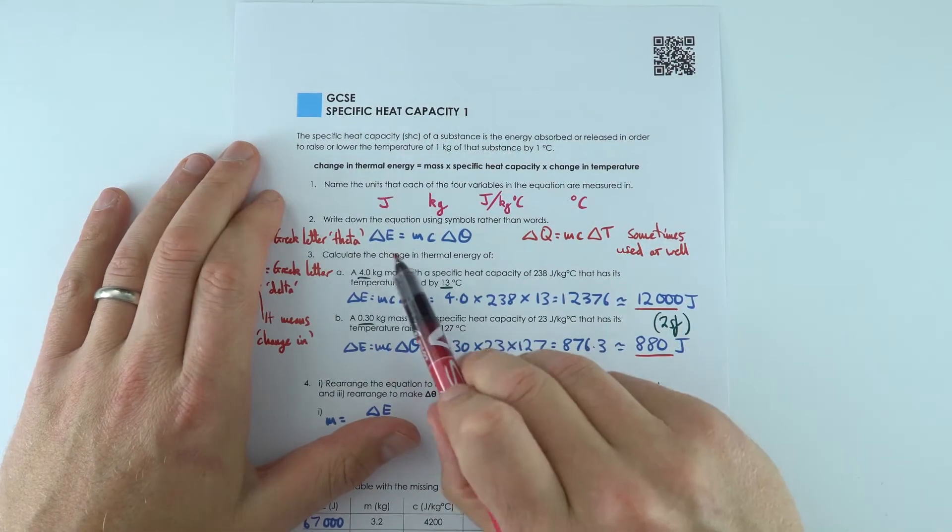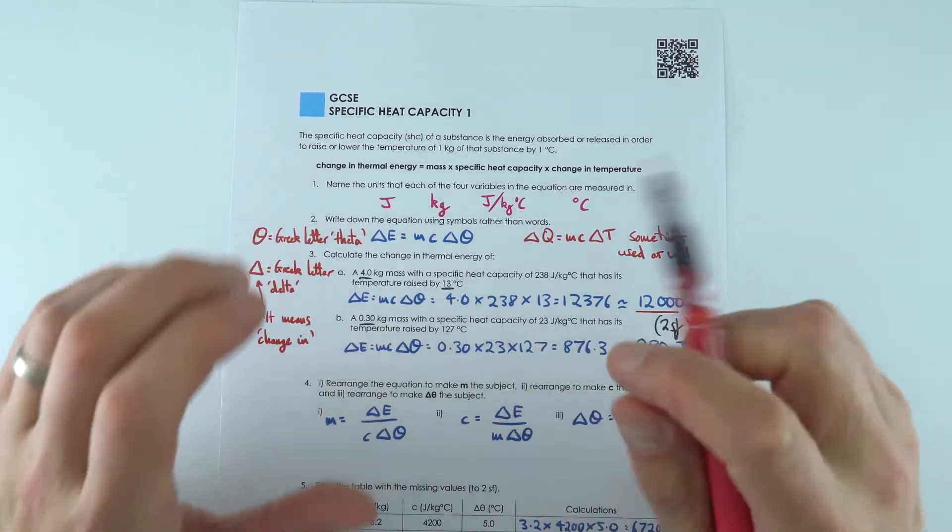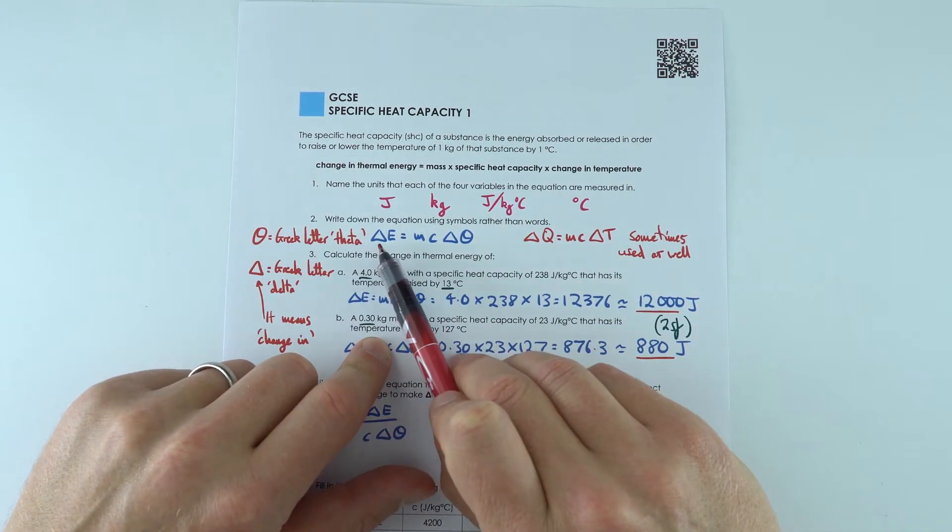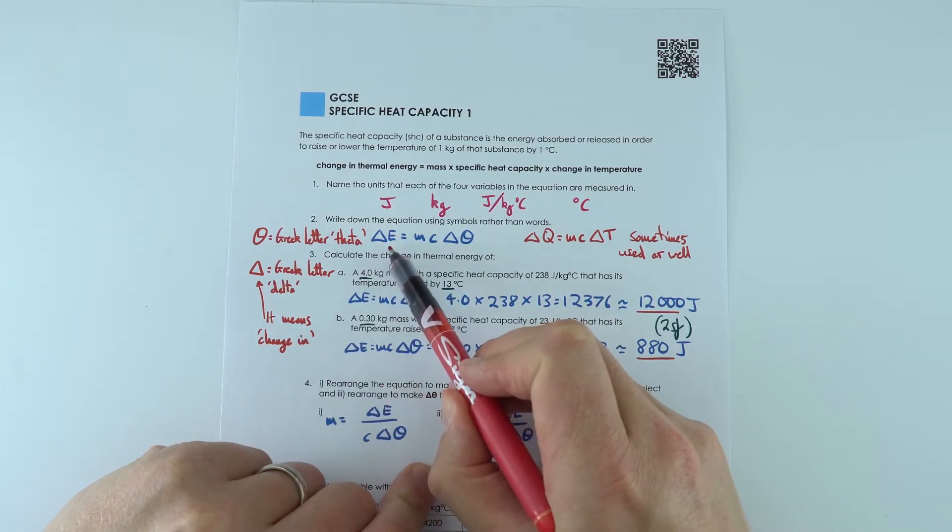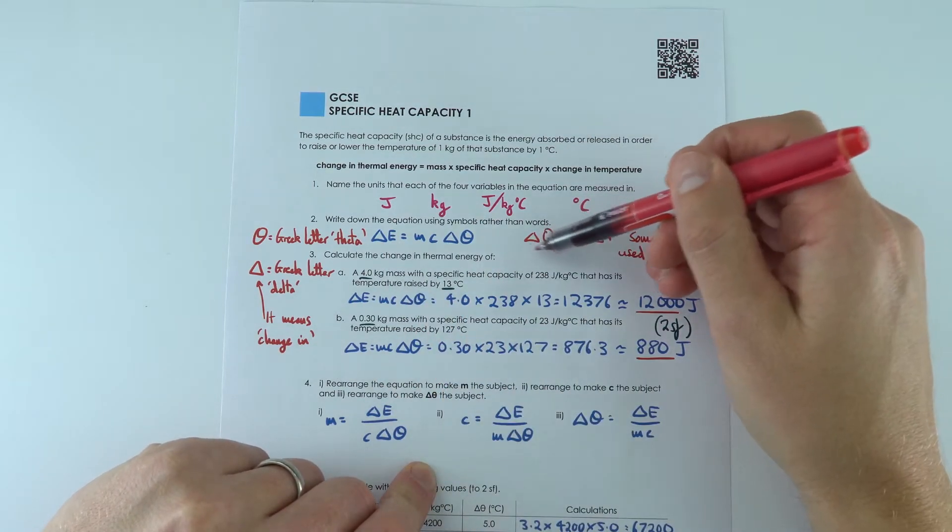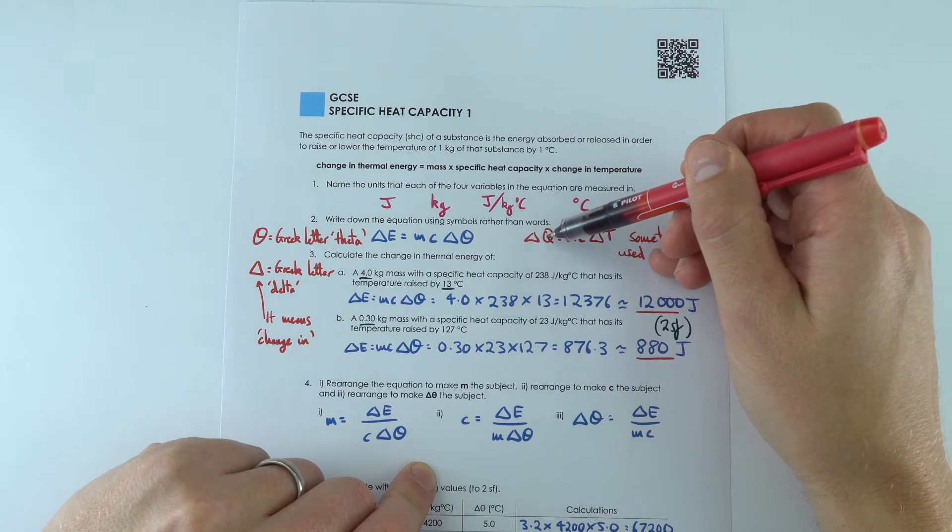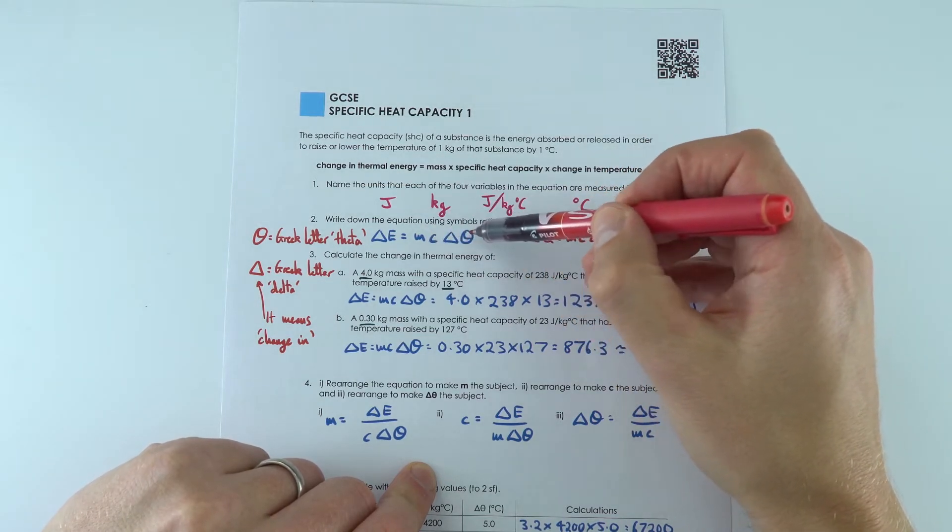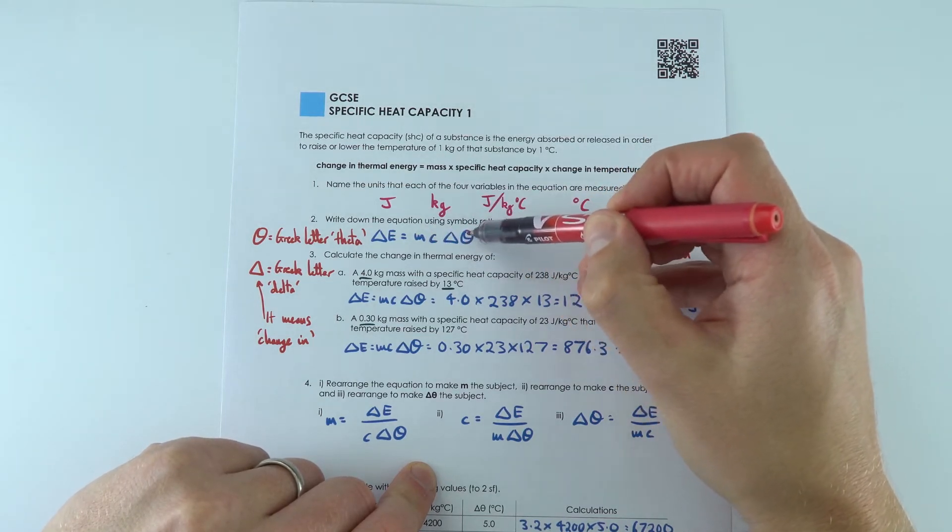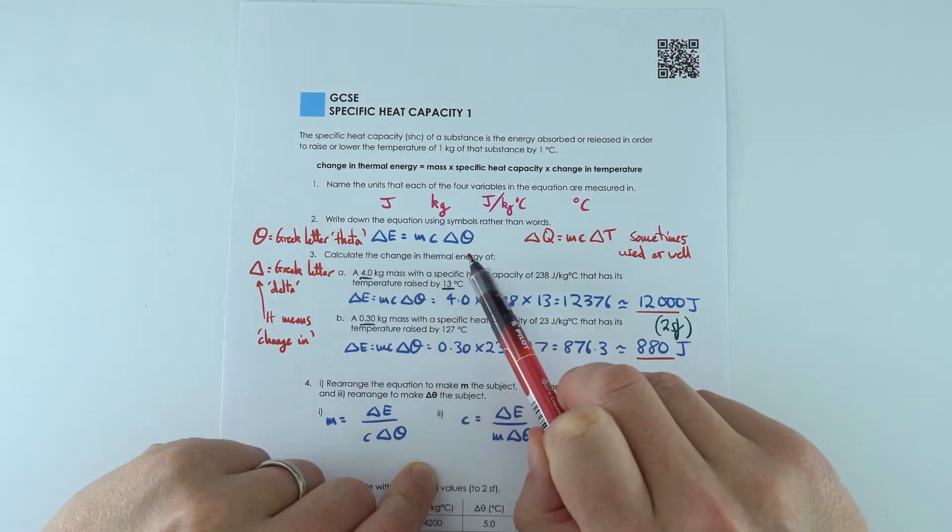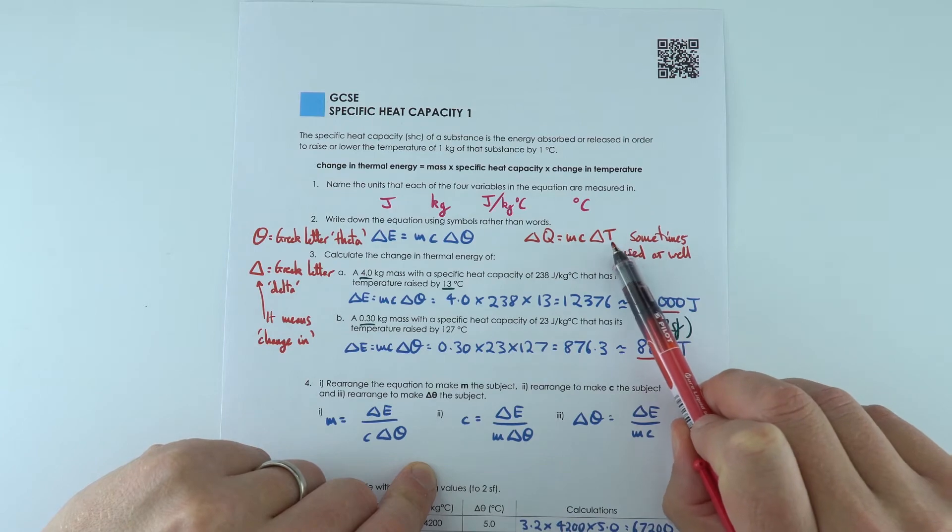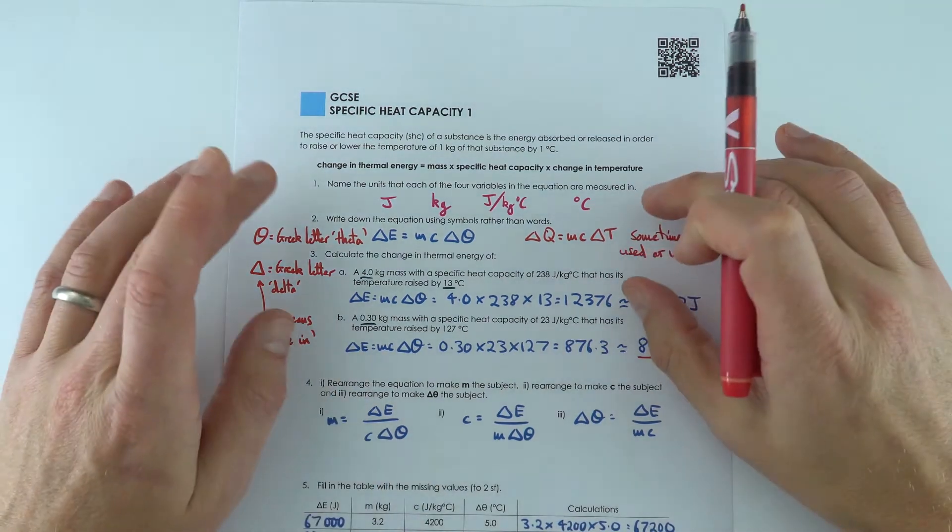Specific heat capacity has four terms in the equation. It gets a little bit complicated. We've got delta E, so delta just means change. We're looking at the change in thermal energy. Sometimes other exam boards use delta Q for thermal energy. Then we've got MC delta theta. This is our change in temperature. The Greek letter theta can be used for temperature, or we can use the letter capital T, depending on what your exam board's using.